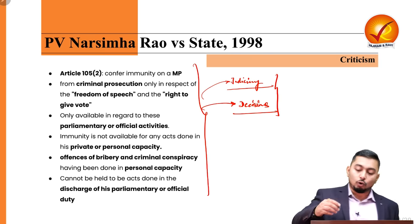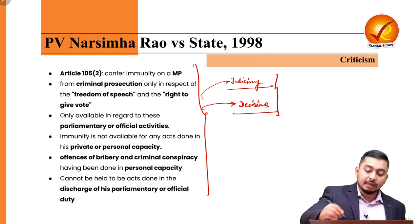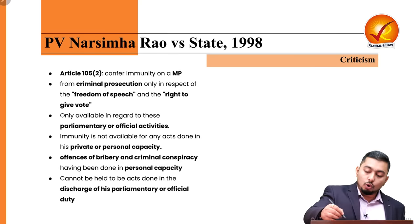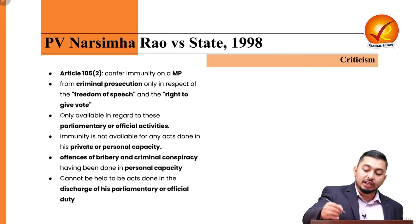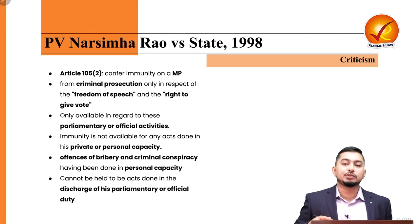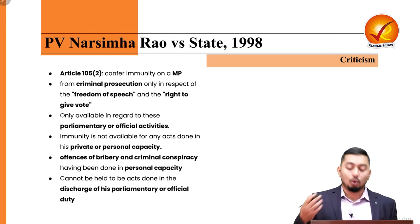Offences of bribery and criminal conspiracy, having been done in personal capacity, cannot be held to be acts done in discharge of parliamentary or official duties. These criticisms come from legal luminaries of India and show that judicial decisions are also not infallible — they can be debated, criticized, and are open to scrutiny from all of us.